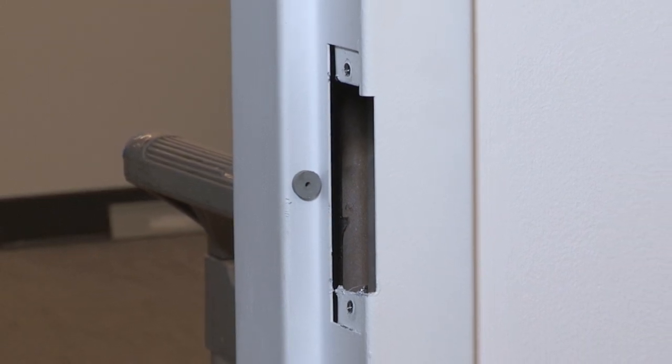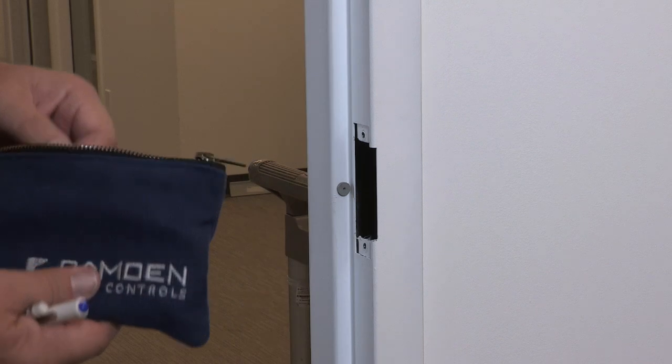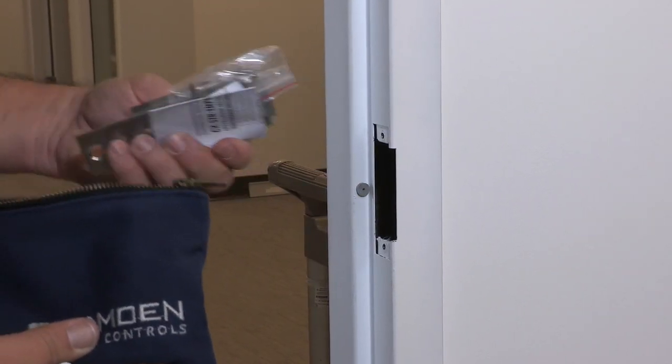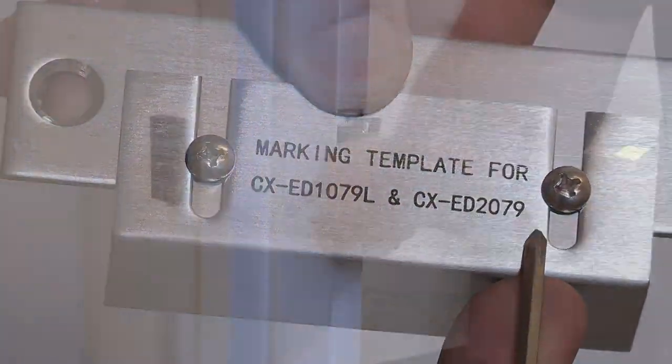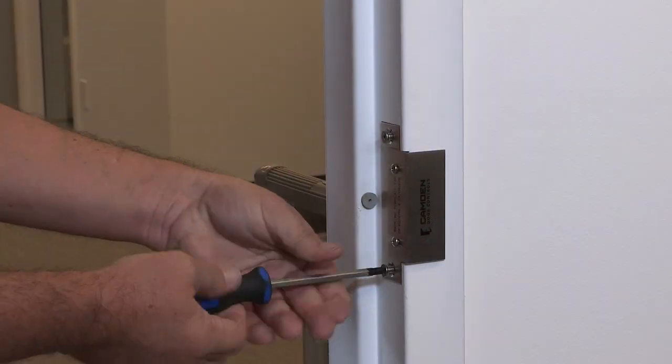We will demonstrate two ways in this section, starting with marking using a Camden ANSI strike marking template kit. Select the template that matches your strike and mount it in the opening using the latch plate screws.